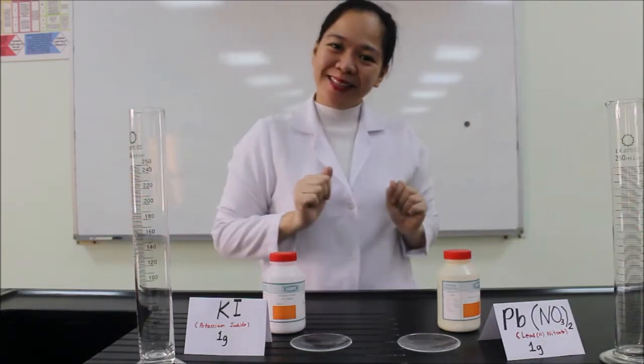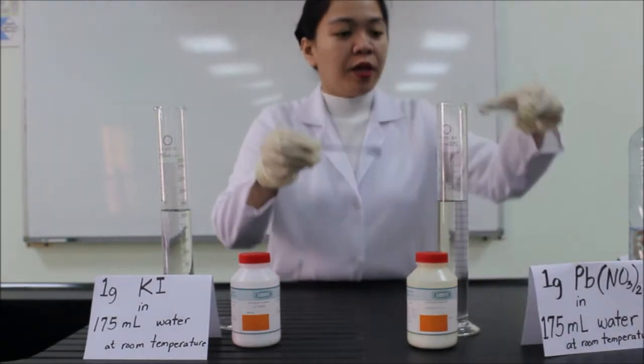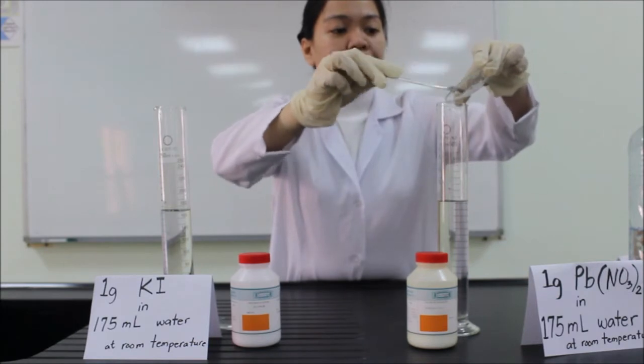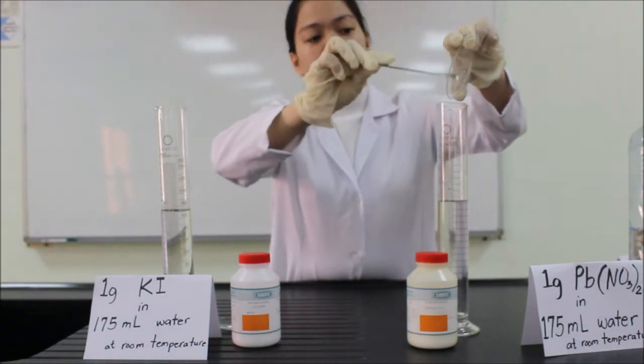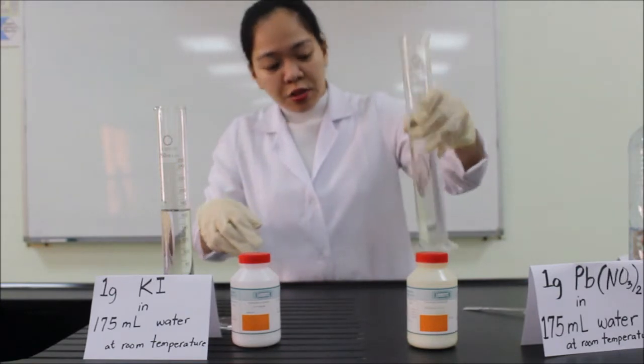Let's begin. Now I will put the 1 gram of lead nitrate in the 175 ml water. Wait until it is thoroughly dissolved.